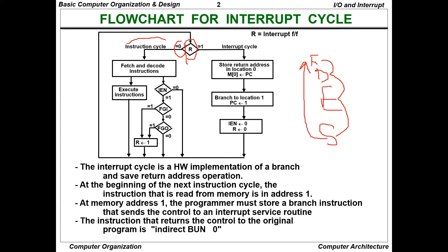When R equals 0 and the instruction cycle is enabled, we fetch and decode instructions. The interrupt enable flag will be 0, meaning no interrupt has occurred. During execution, the system checks the IEN flag. When IEN equals 1, it checks the flag input. If flag input is set to 1, R changes to 1, meaning an interrupt cycle begins.